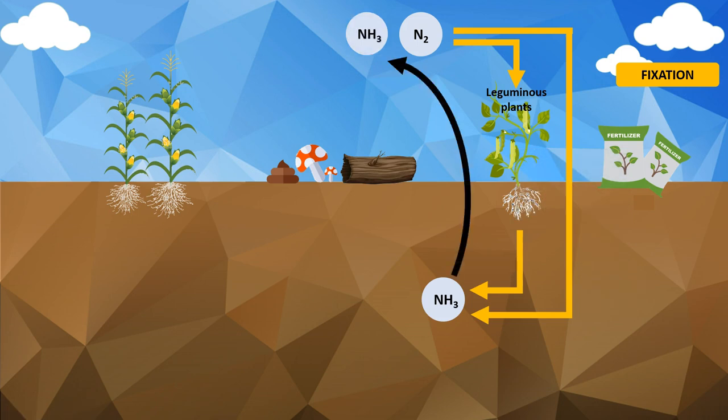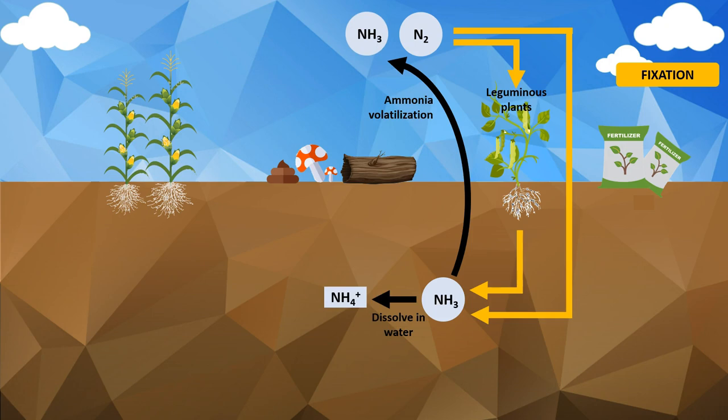Ammonia gas produced is either lost to the atmosphere through ammonia volatilization, or dissolved in water to produce ammonium ions. Ammonium ions would actually make a more efficient source of nitrogen because they require less energy to incorporate into protein. However, these positively charged ions are usually bound to negatively charged clays in the soil, which makes them not readily available for plants.